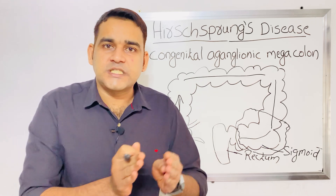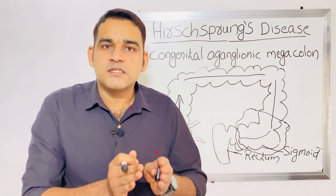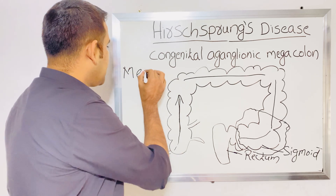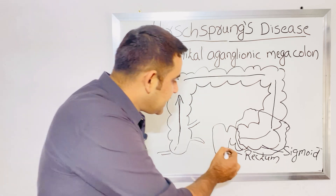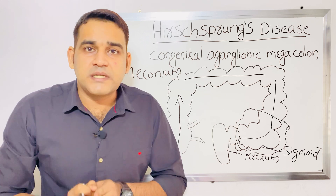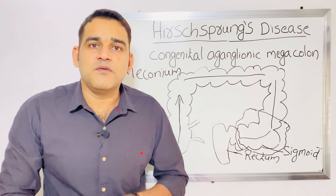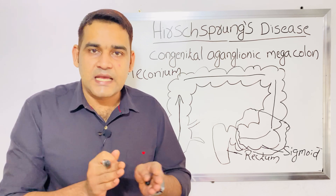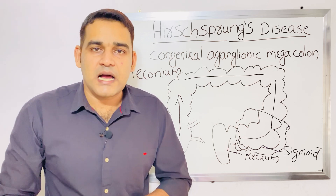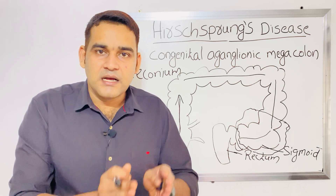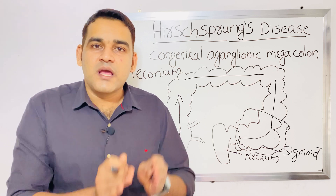After childbirth, a normal child will pass meconium — the first stool — within 24 to 48 hours. But in Hirschsprung disease, there is no peristalsis movement, so the child will not pass meconium within the first 48 hours. This delay in passing meconium is a key clinical manifestation of congenital aganglionic megacolon.